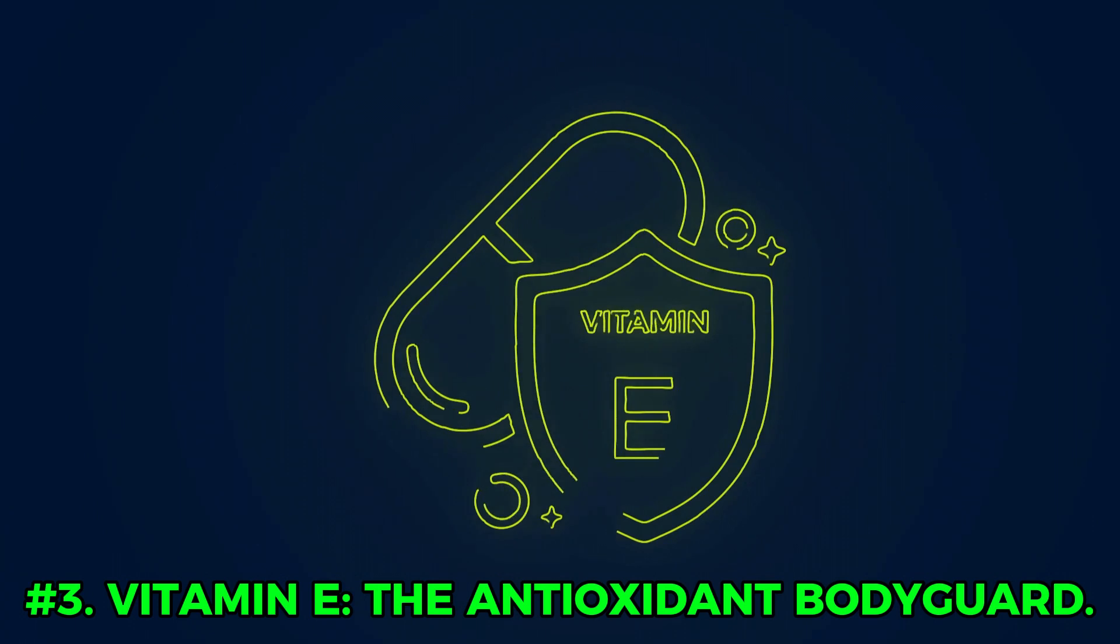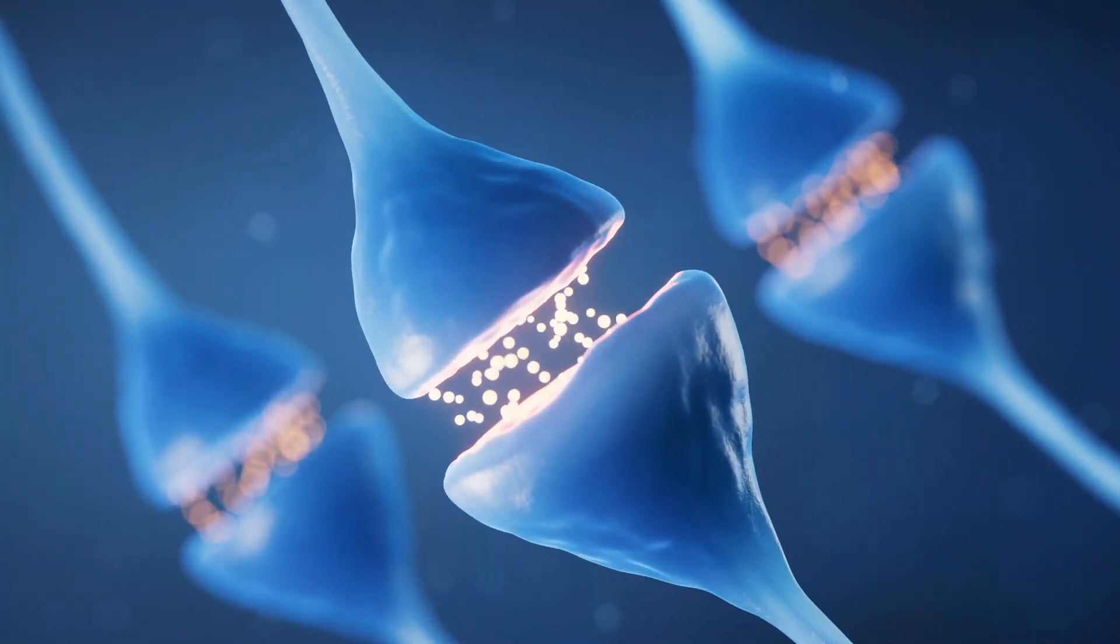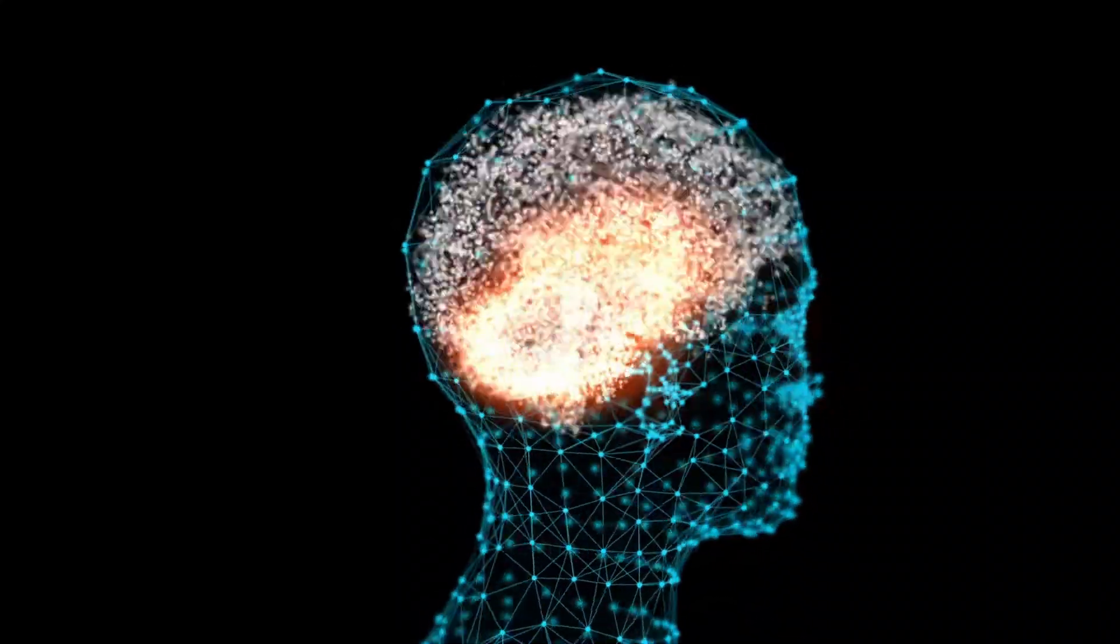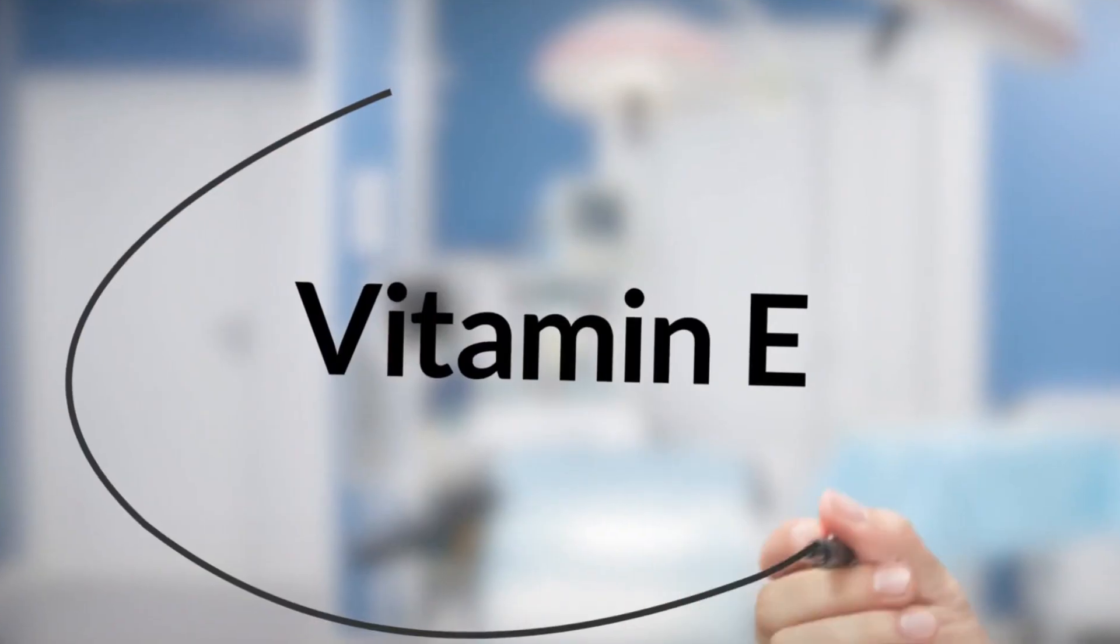Number 3: Vitamin E, the antioxidant bodyguard. Meet vitamin E, your nervous system's personal bouncer. Its mission? To neutralize nasty free radicals that want to trash your nerve cells. Oxidative stress is one of the leading contributors to nerve degeneration, and vitamin E is your frontline defense.